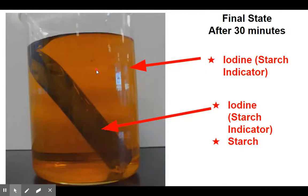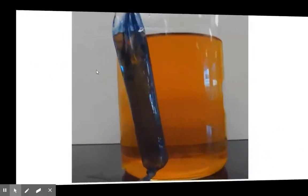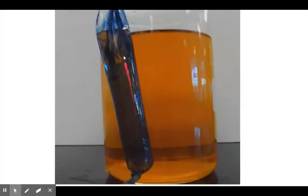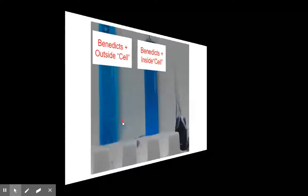What about the glucose? Well, we could actually open up this bag and test for the presence of glucose using Benedict's solution inside the bag. And why not test the outside environment for glucose as well? If you remember, inside the bag there was starch and there was also glucose. So let's see what happened.